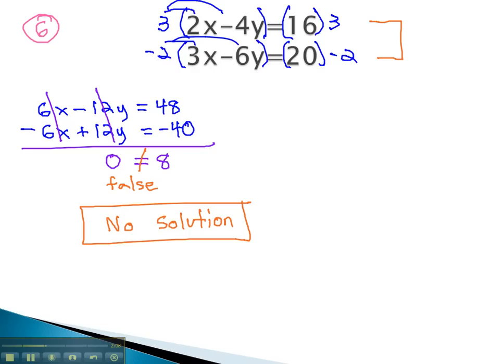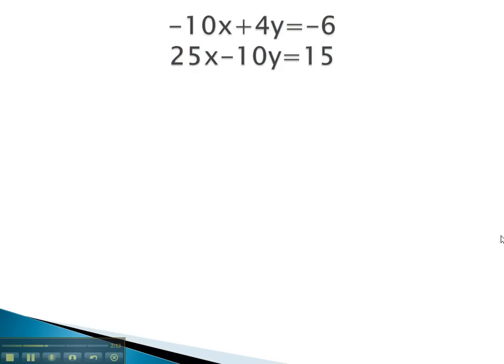Let's try another example where we see what happens if the variables subtract out completely. In this problem, let's try and get opposites in front of the y. Notice the least common multiple of 4 and 10 is going to be 20. This means we want 4y for one equation, and negative 4y in the other equation.